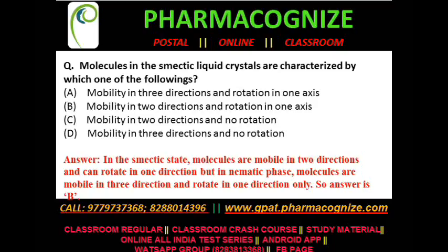Our fifth question: molecules in the smectic crystal are characterized by which one of the following? Option A is mobility in three directions and rotation in one axis. Option B is mobility in two directions and rotation in one axis. Option C is mobility in two directions and no rotation. Option D is mobility in three directions and rotation in two directions. The answer is Option B — mobility in two directions and rotation in one axis — because smectic crystals follow this characteristic. These are the five questions for today; please like our Facebook page and subscribe to our YouTube channel.